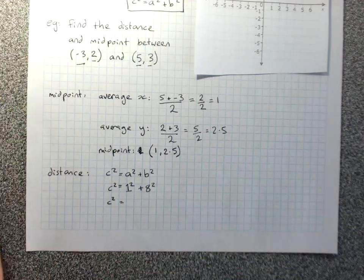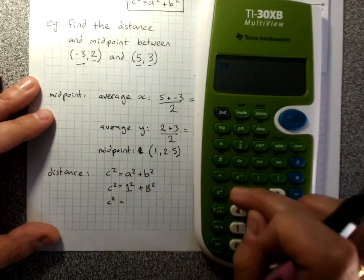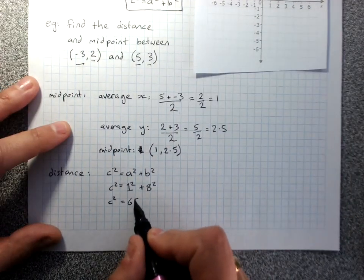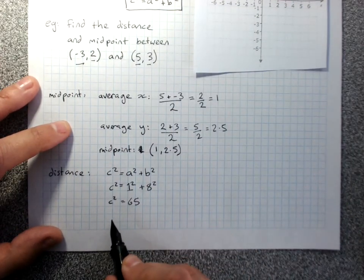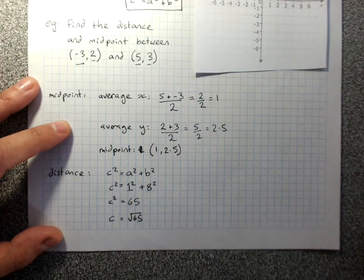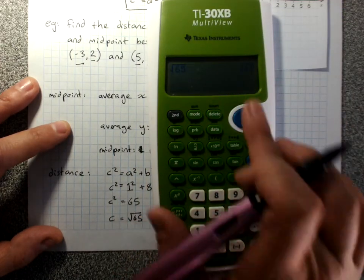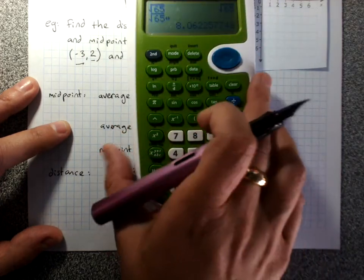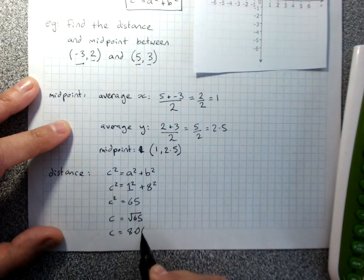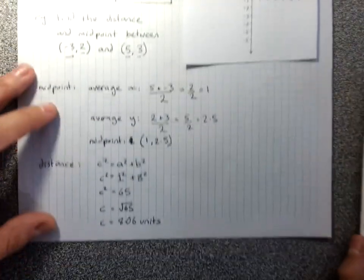For Pythagoras, get our answer for c squared. Sorry about the noise outside. 1 squared plus 8 squared, 65. Find the square root to get back to c. Square root of 65. When we get a funny answer, 8.06, and we just say units because we're just on a grid, we don't have centimeters or anything like that.